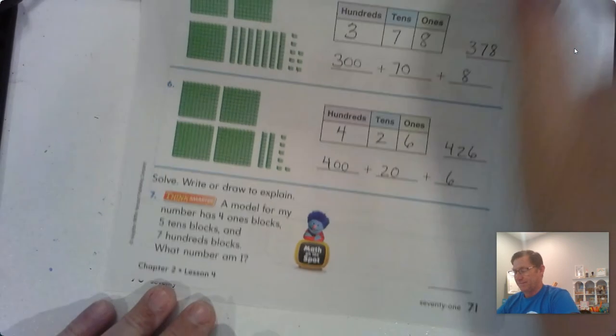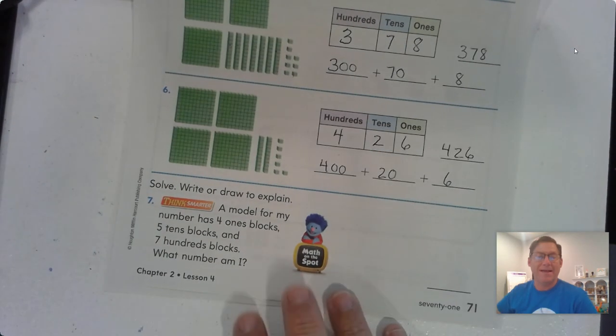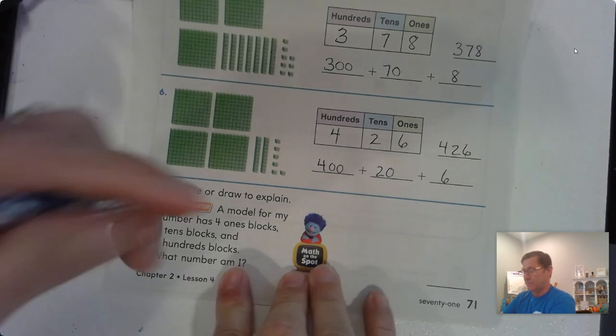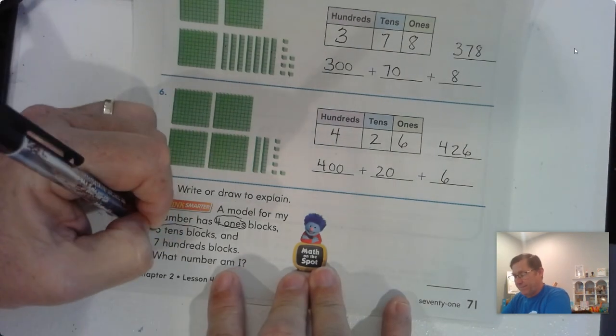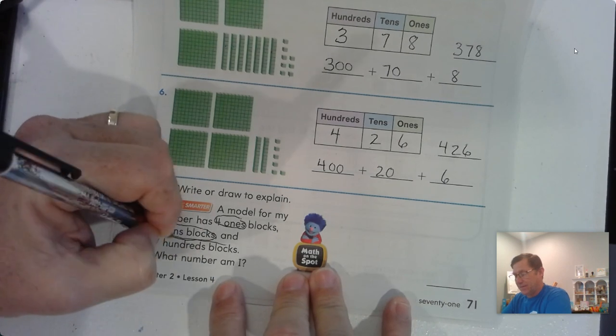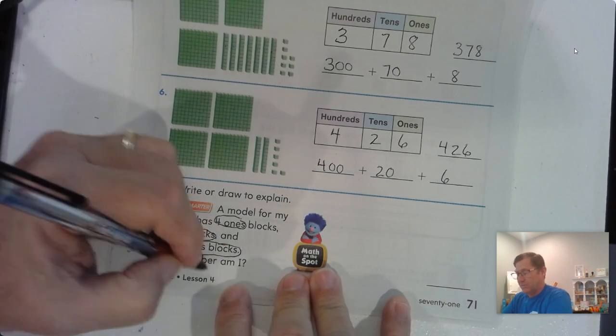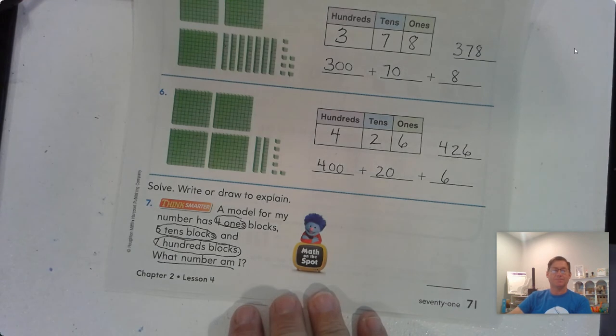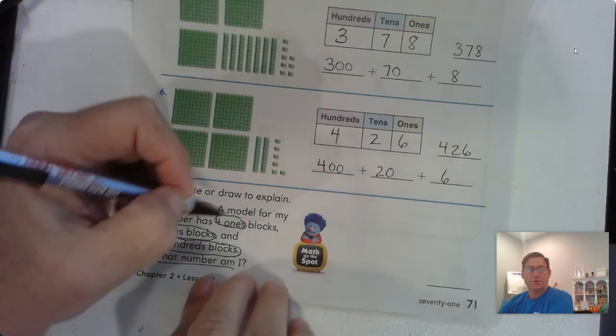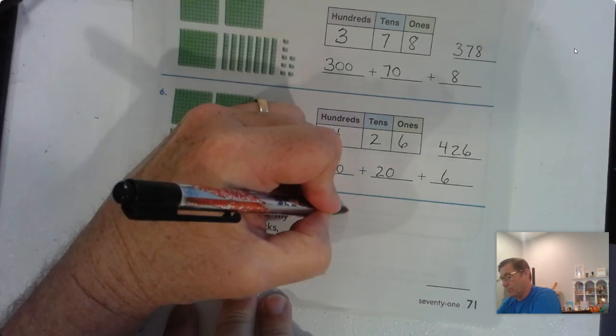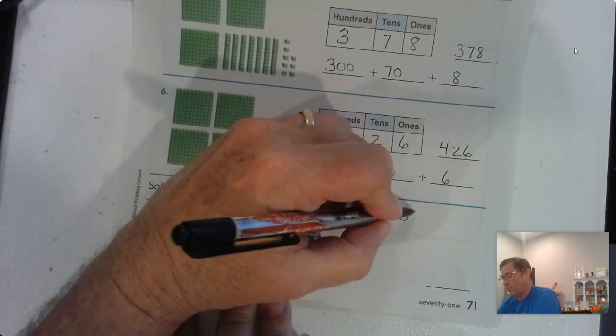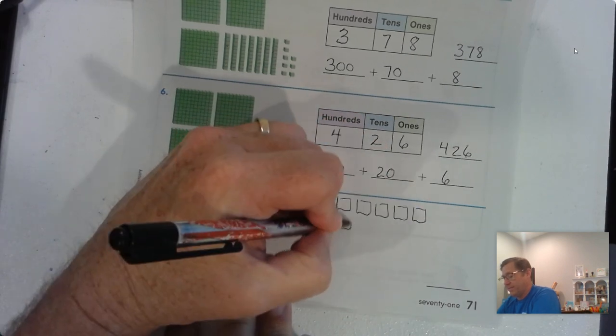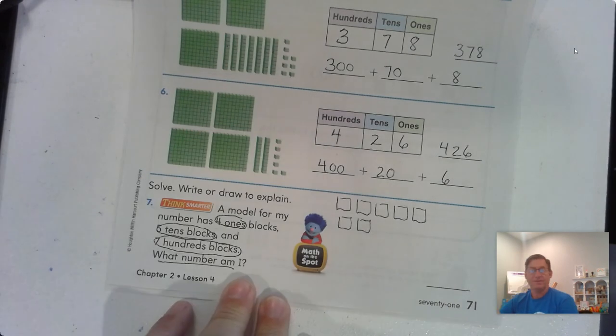Number 7. Solve, write, or draw to explain. A model for my number has 4 ones, 5 tens, and 7 hundreds. What number am I? Okay, well, let's start with the 700 blocks. Let's write them. One, two, three, four, five, six, seven. All right, so we've got 700 blocks.